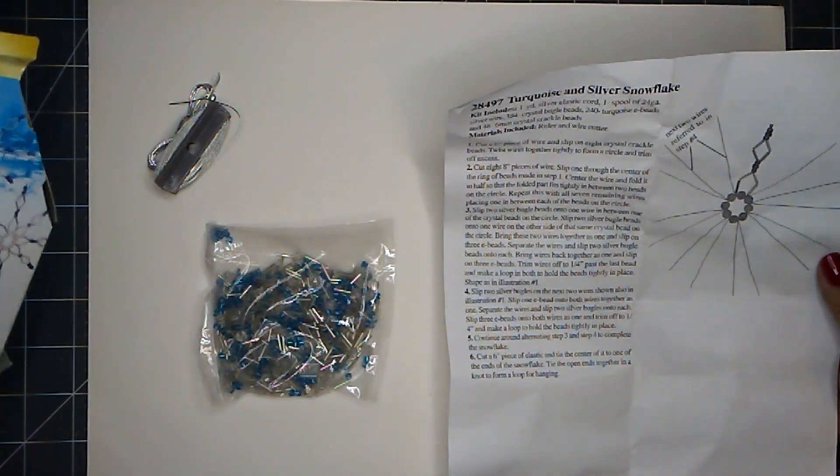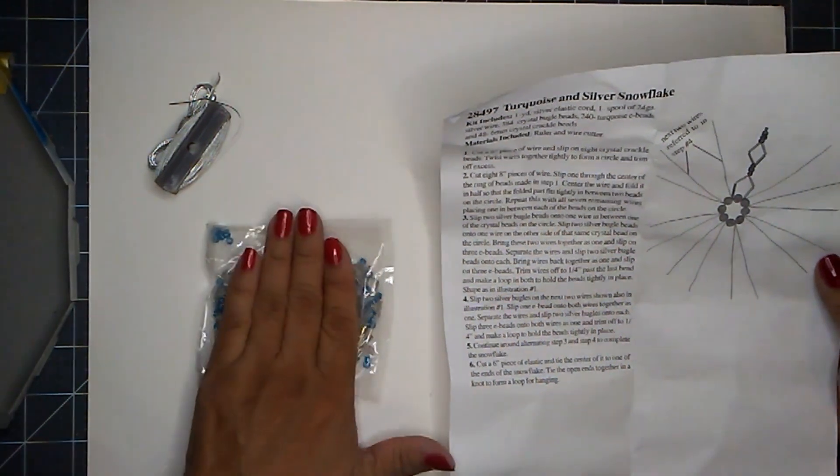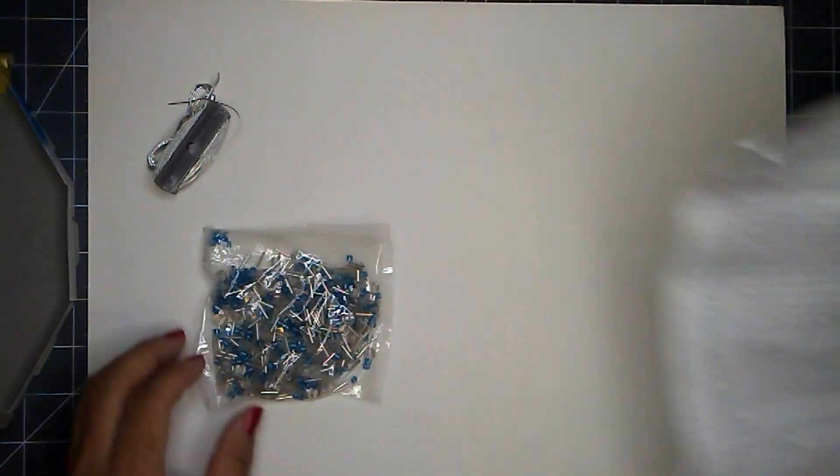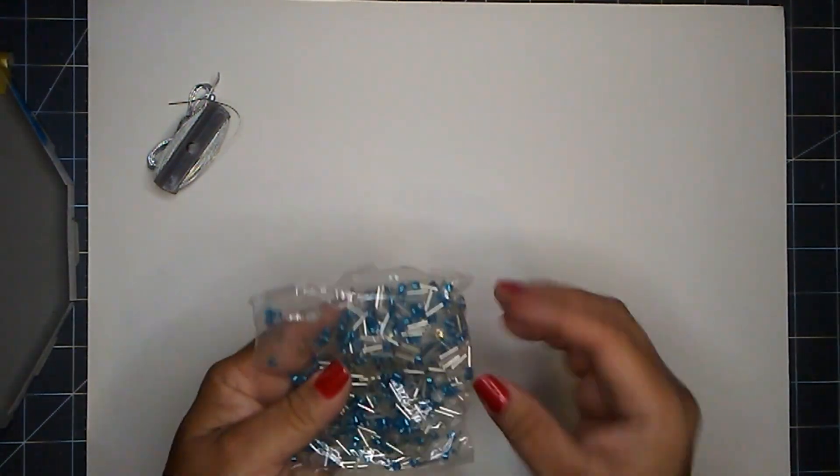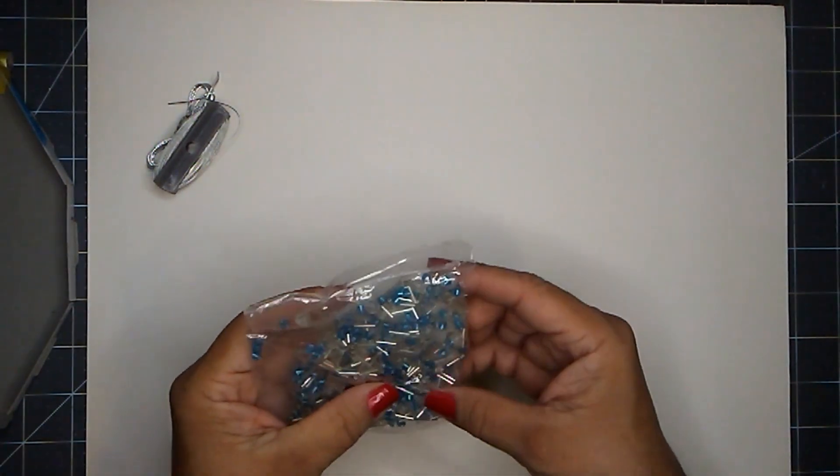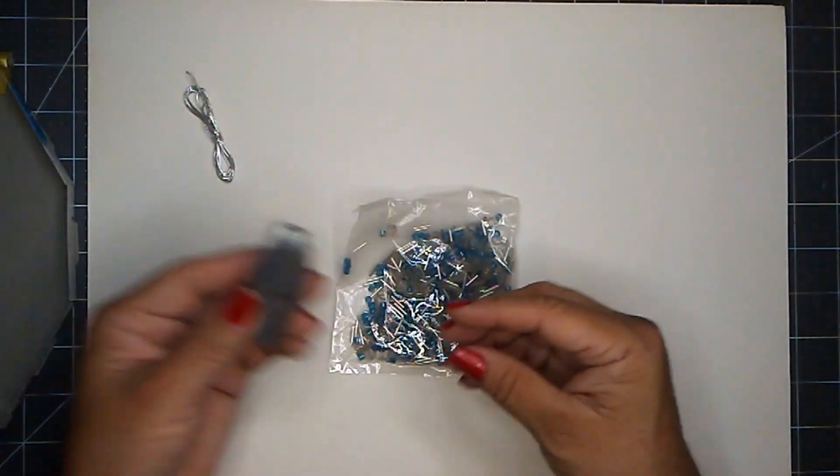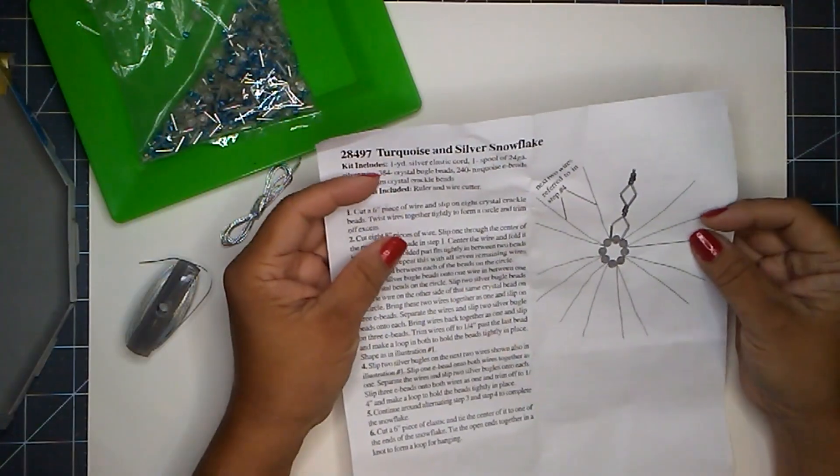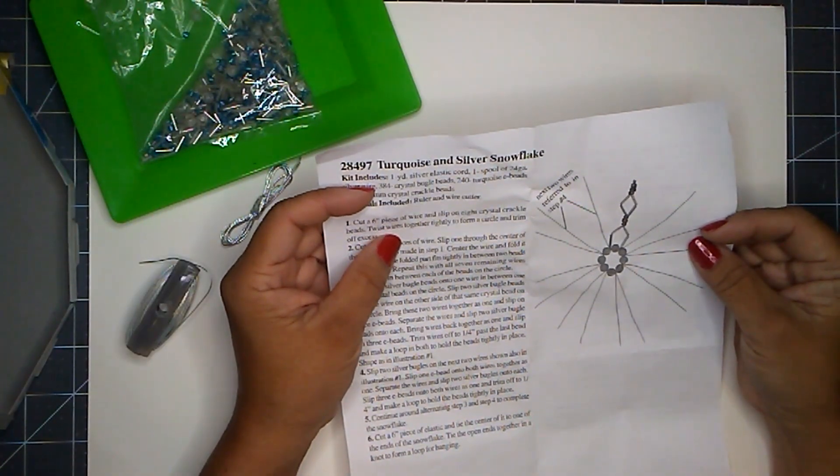Materials included are ruler and wire cutter. I don't see that, so it does not say. I think I need my own ruler, wire cutter, and all the beads seem to be in really good condition. Let's try this.